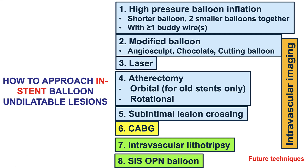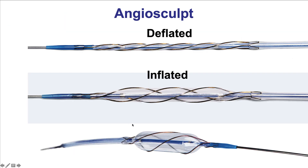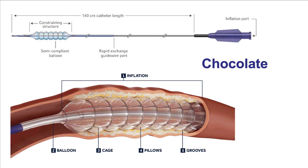For lesions that are balloon undilatable — where high pressure inflation with non-compliant balloons fail — the next step is to use a plaque modification balloon. Three are currently available in the US: the NGEO Sculpt, the cutting balloon, and the chocolate balloon. The NGEO Sculpt is a balloon that has nitinol wires wrapped around it; when inflated, the balloon pushes those wires against the coronary plaque, modifying the lesion. The chocolate balloon is similar but has the opposite effect — there is a cage around the balloon, and once inflated, the balloon protrudes between this cage so the vessel sees the protruded segments of the balloon.